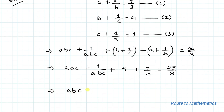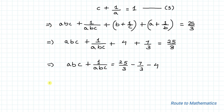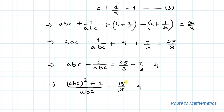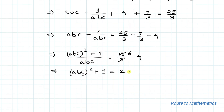Moving all numbers to the right-hand side: abc + 1/(abc) = 25/3 − 7/3 − 4. This gives (abc)² + 1 all divided by abc = 18/3 − 4 = 6 − 4 = 2. So (abc)² + 1 = 2·abc, which rearranges to (abc)² − 2·abc + 1 = 0.